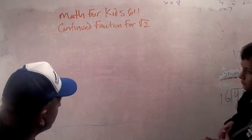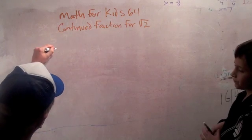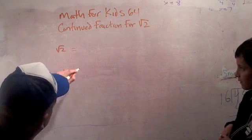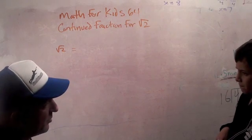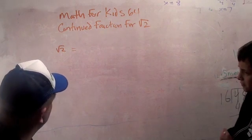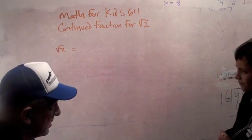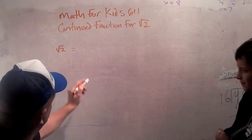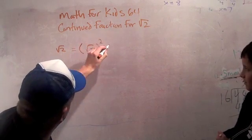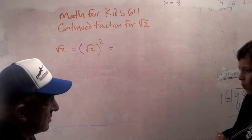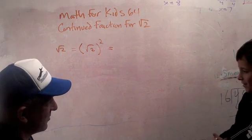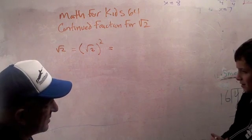We just learned about the square root of 2 yesterday. The square root of 2 is a special number. What one property does it have? That when you square it — the square root of 2 times the square root of 2 — you get 2.